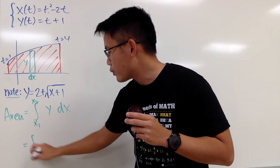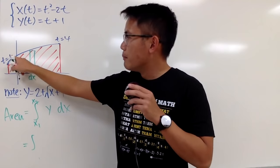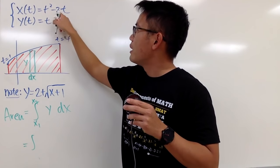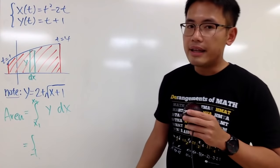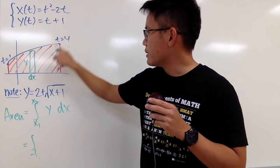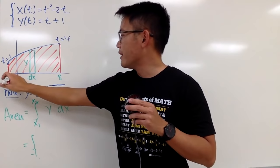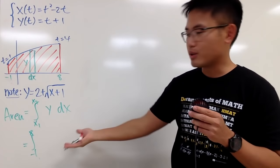We have the integral. x1 is right here. That's when t is 1. Plugging 1 into the t equation, you get 1 squared minus 2 times 1, which is negative 1. And then, when you plug in 4 into here, you get 16 minus 8. You get 8. So, you have negative 1 and 8. And then, that's pretty much what we have.